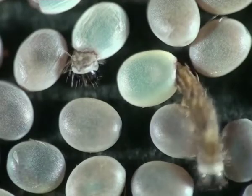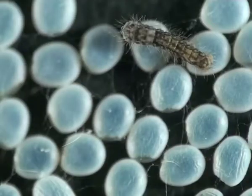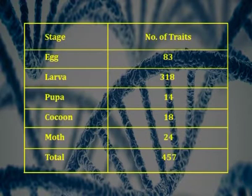Looking at the number of traits present in different stages: the egg stage has 83, larva has 318, pupa has 14, cocoon has 18 traits, and moth has 24 — totaling 457 hereditary traits in the mulberry silkworm. More than 90% of the traits are spontaneous in origin. They are induced by radiations, chemicals, extreme temperatures, etc. Multiple alleles are found in many loci.